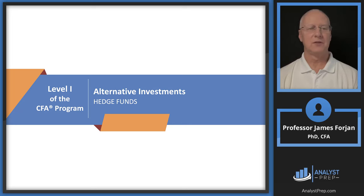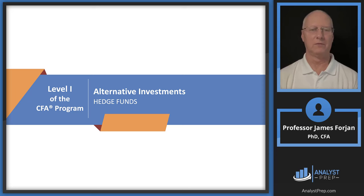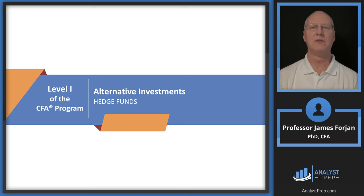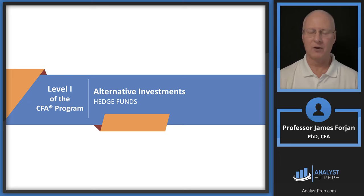Hey, it's Jim. This is Level 1 of the CFA Program, the topic on alternative investments and the learning module on hedge funds. Think back a century ago to the 1920s with the origin of mutual funds. The strategy was super simple: investors wanted to find a company and buy it at a low price and sell it at a high price. Everybody was taking the long position, and this was the standard strategy in the 20s, 30s, and 40s.